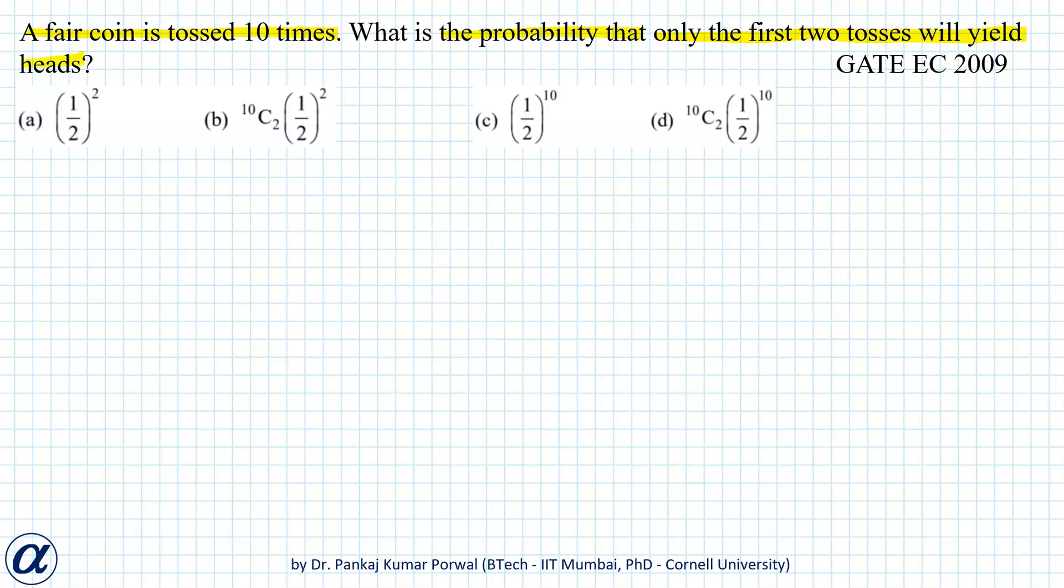Note that from the appearance it looks like a binomial probability question, but it is not a binomial probability question because if it were binomial, then the two heads could occur at any of the two places out of these 10 places.